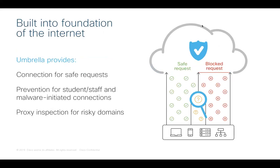Umbrella provides security enforcement without any delay. When Umbrella receives a DNS request, it first identifies which customer the request came from and which policy to apply. Next, Umbrella determines if the request is safe or whitelisted, malicious or blacklisted, or risky. For safe requests, we route the connection as usual. If it's a malicious request, we route the connection to a block page, so the connection is never actually made. And for any risky requests, we route the connection to our cloud-based proxy for deeper inspection.